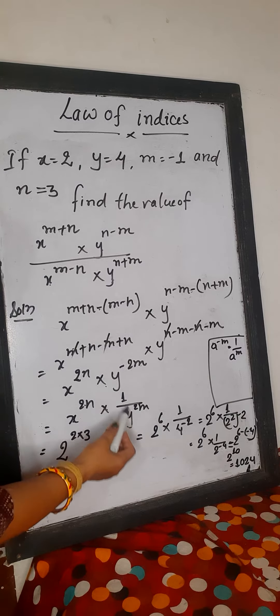Here, x and x — both have the same base. Using the division formula, we apply the minus (subtraction) rule for exponents. Similarly, y and y — both have the same base y, so we also apply the minus rule for those.